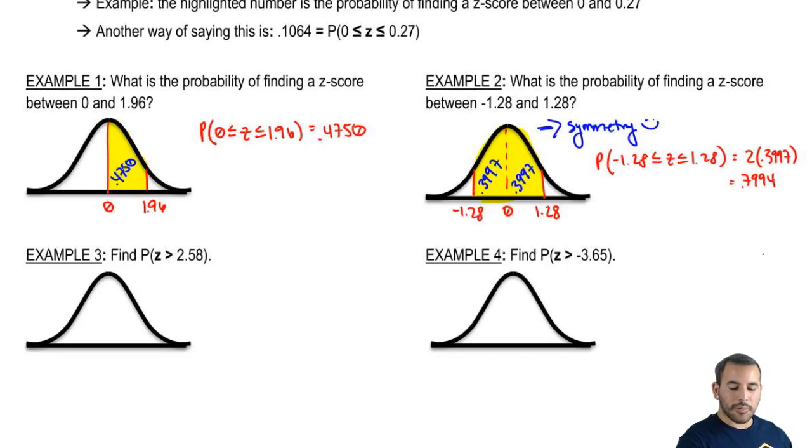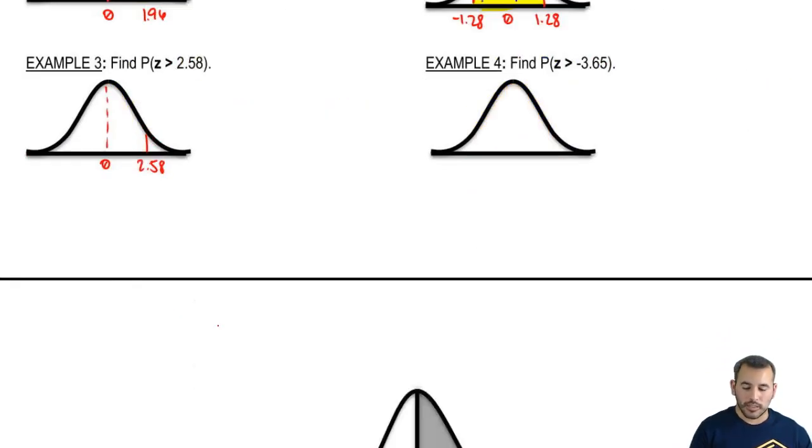We have example 3. Find the probability that z is greater than 2.58. We have our 0, and here's 2.58. Let's go ahead and look up 2.58 on our table. Just real quick, let's shade in what we're looking for. We're looking for 2.58 and on, from 2.58 to the right.